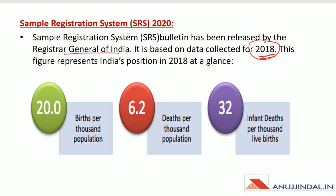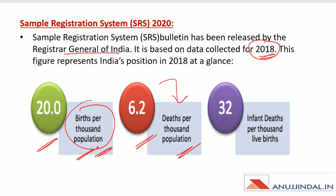This SRS is based on data collected for 2018. According to this, there are 20 births per thousand population — meaning the birth rate is 20. There are 6.2 deaths per thousand population, and there are 32 infant deaths per thousand live births. So the infant mortality rate is 32, the death rate is 6.2, and the birth rate is 20.